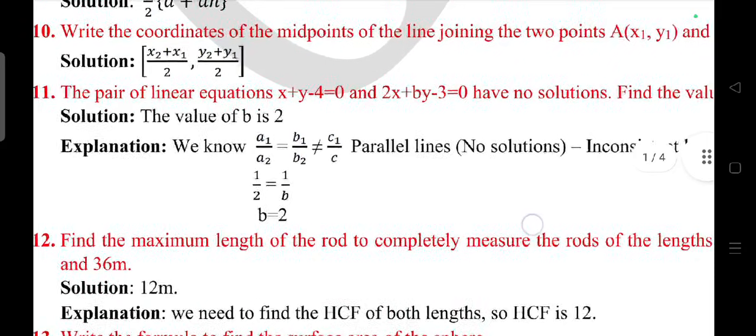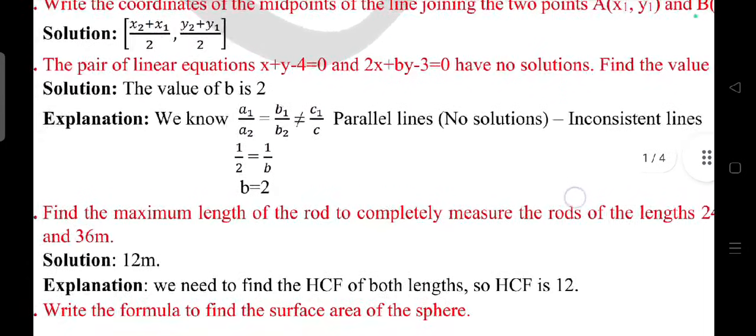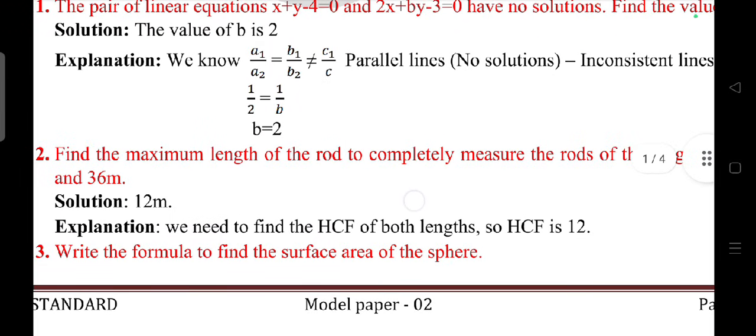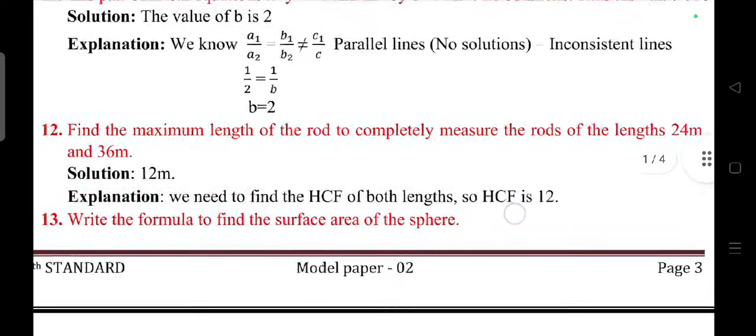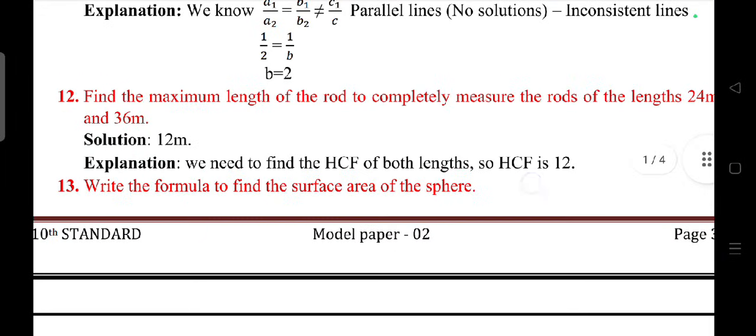The pair of linear equations x plus y minus 4 equals 0, 2x plus by minus 3 equals 0 has no solution. Find the value of b. Find the maximum length of a rod to completely measure the rods of length 24 meter and 36 meter. Answer is we have to take HCF, we will get the answer 12 meter.